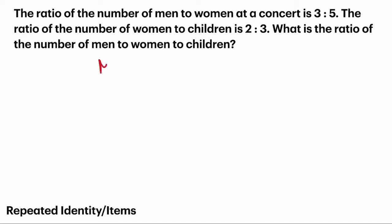The ratio of the number of men to women at a concert is 3 is to 5. The ratio of the number of women to children is 2 is to 3. So now the question wants to know, what is the ratio of the number of men to women to children? Before we give the answer, we need to look at the repeated identity in the 2 ratios given. So women is the one that's common. We have 5 and we have 2. So the common multiple of 5 and 2 is 10.